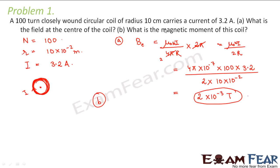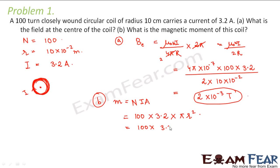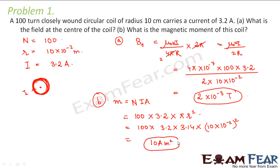The second part asks us to calculate the magnetic moment of this coil. Magnetic moment is the product of current and area, and since it has n turns it gets multiplied by the number of turns. So this will be n × I × A: n is 100, I is 3.2, and A is πr². This gives 100 × 3.2 × 3.14 × (10 × 10⁻²)², which comes out to be 10 ampere meter squared. So this is the magnetic moment of the coil.